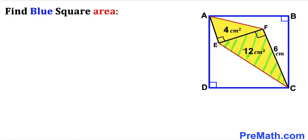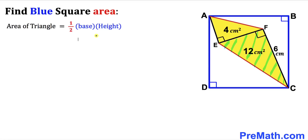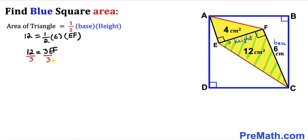Let's focus on right triangle EFC, whose area is 12 and side length FC is 6. Recalling the triangle area formula: area = ½ × base × height. Here the base is 6 and the height EF is unknown. Substituting: 12 = ½ × 6 × EF. Dividing both sides by 3 to isolate EF, we find EF = 4.